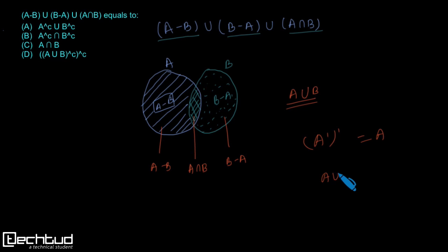Similarly, this is (A ∪ B)' and its complement which is equal to A union B itself, right? This expression is equal to this last option A union B, fine. Correct option is D.